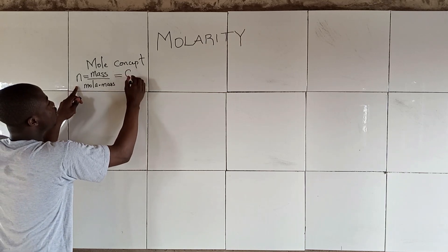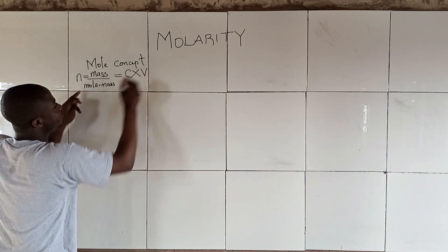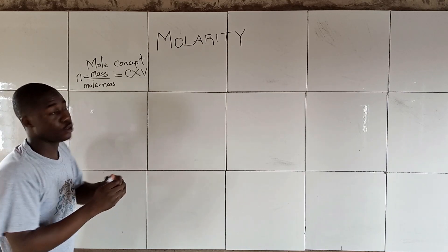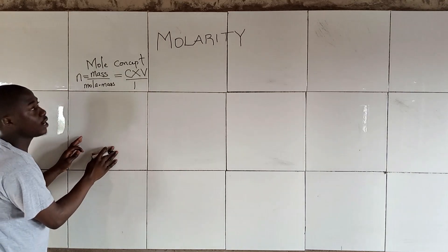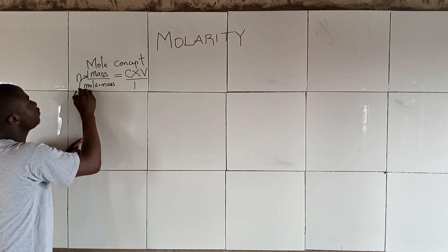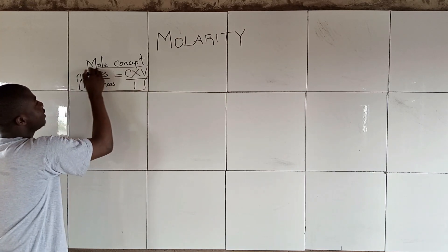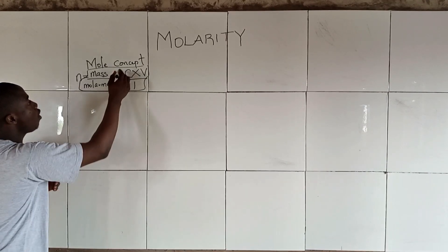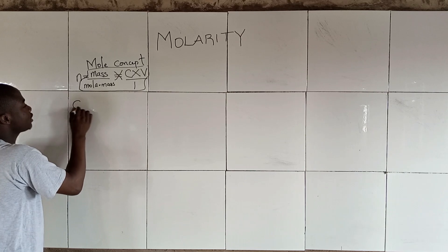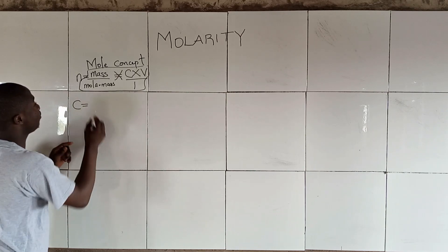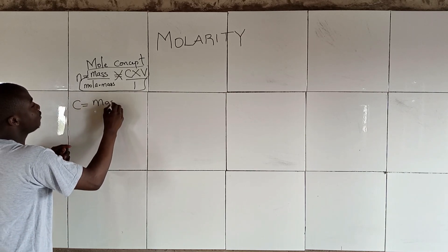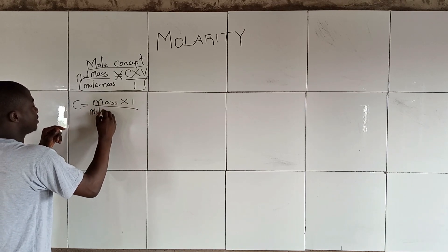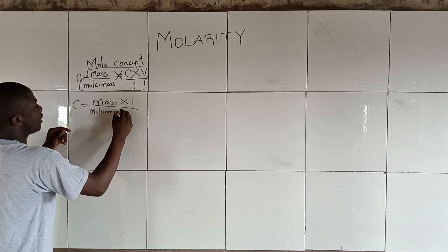Now, the number of moles is also given as concentration times volume — precisely, volume in dm³. So, since number of moles equals mass over molar mass, and number of moles is the same as concentration times volume, concentration will be made the subject of the formula, giving us: concentration = mass over (molar mass × volume).